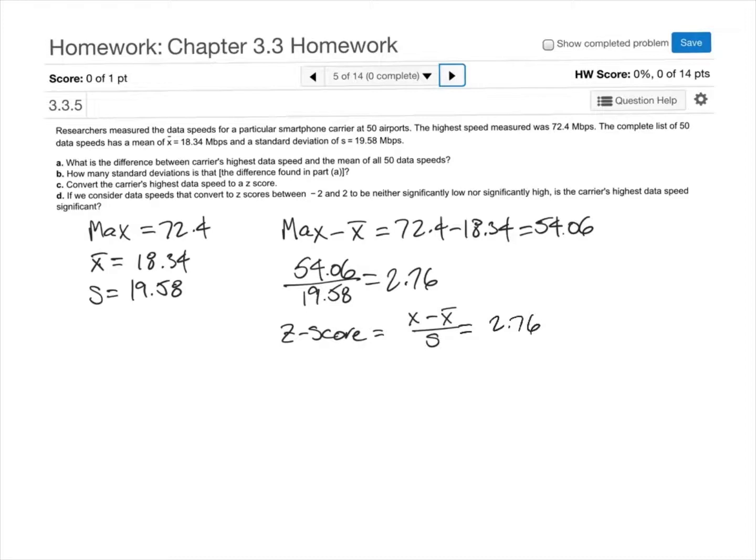The next question says if we consider data speeds that convert to z-scores between -2 and 2 to be neither significantly low nor significantly high, is the carrier's highest data speed significant? In other words, if we were to look at a number line and say that any z-score between -2 and 2 is not significantly low nor significantly high, then anything outside of that interval, like our z-score of 2.76, would be significantly high.